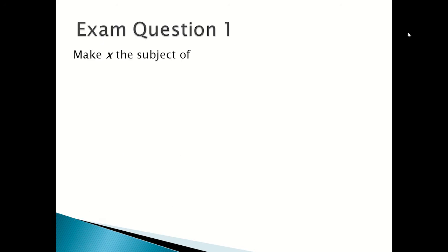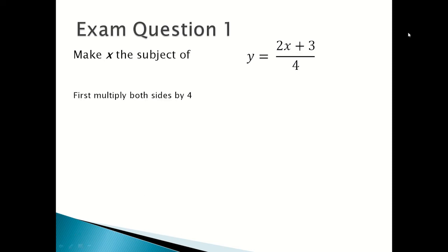Now we're going to look at the first exam question. Make x the subject of y equals 2x plus 3 over 4. First you multiply both sides by 4 to get 4y equal to 2x plus 3.